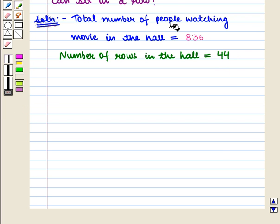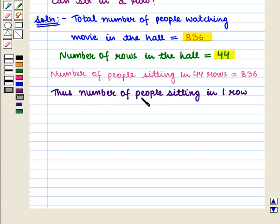It means we are given number of people sitting in 44 rows are equal to 836. Thus, number of people sitting in one row will be equal to 836 divided by 44.